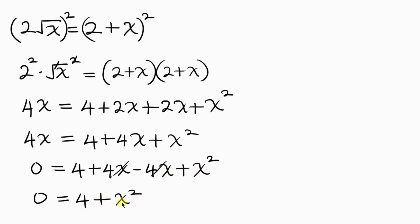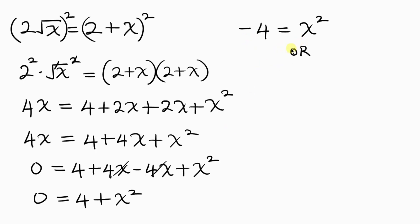Now we're looking for x, so I'm going to move 4 to the left hand side. When 4 crosses to the left it becomes negative 4, equal to x squared. I can switch their positions to write x squared equal to negative 4.